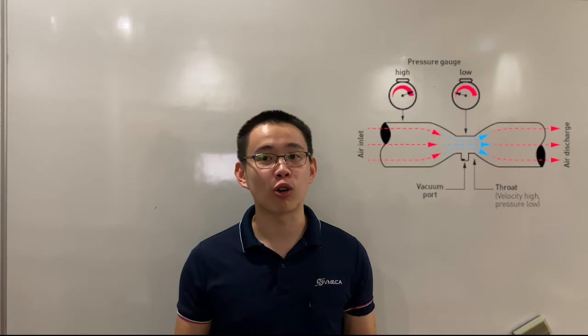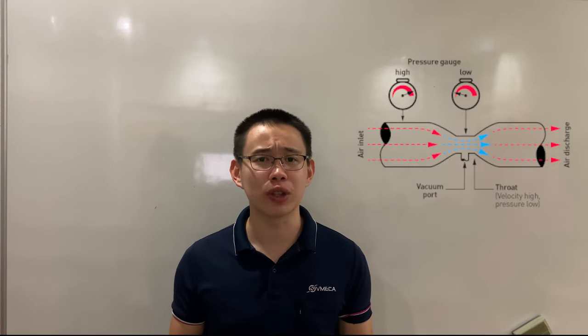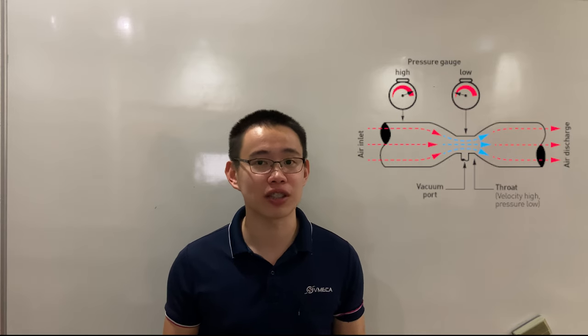So, by making a hole in the constriction region, it will, in theory, create a very strong suction.